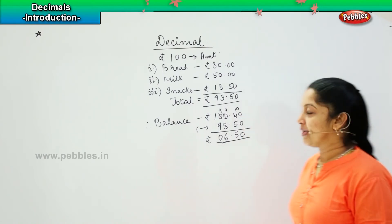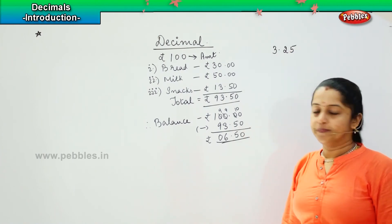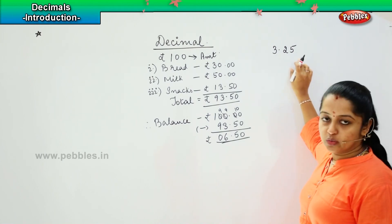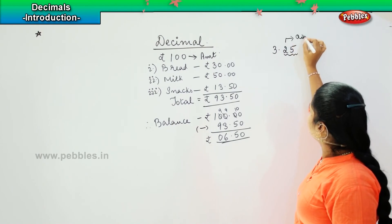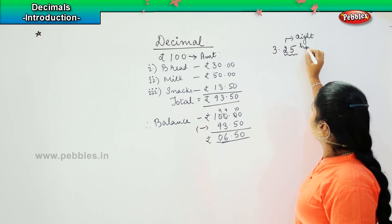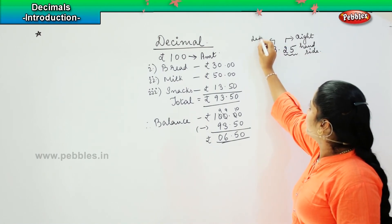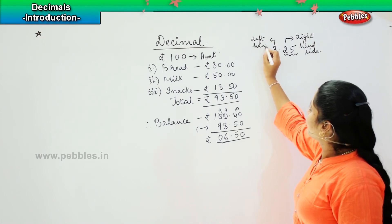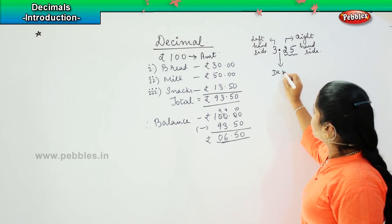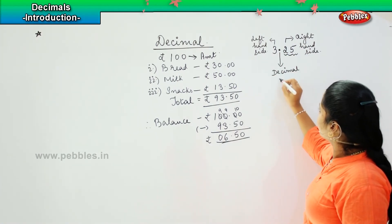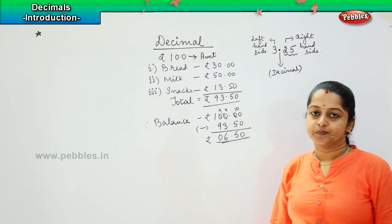Now I give you one more example — three point two five. So if the value is three point two five, these digits are placed to the right side, towards the right hand side. And this is the value which comes to the left hand side. And this point — this is called as my decimal. So this point denotes the decimal. Is it clear, children?